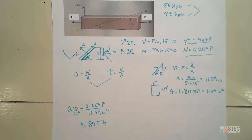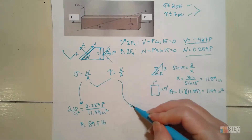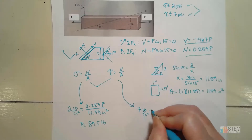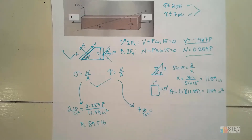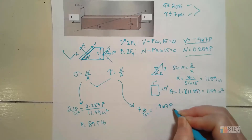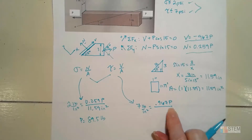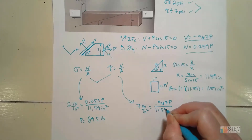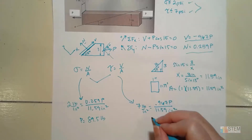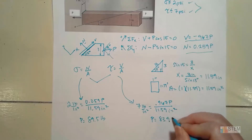Now I still have to check the shear stress. The shear stress is going to be 7 PSI, set equal to the shear force — taking the absolute value since the sign doesn't really matter. So we have 0.967 P over 11.59 inches squared. Solving for P here gives us 83.9 pounds.